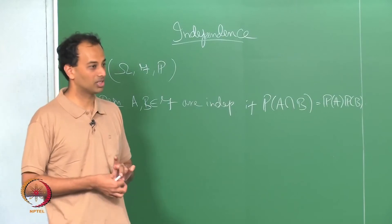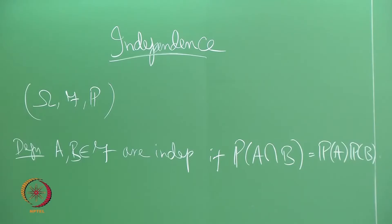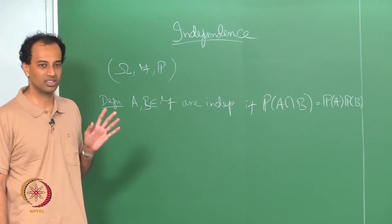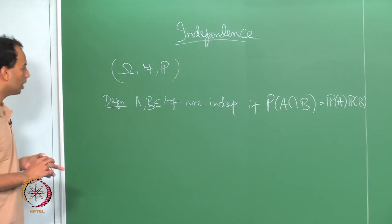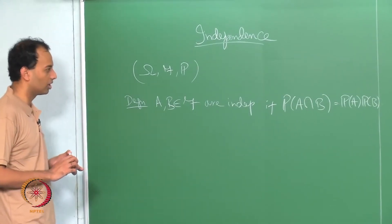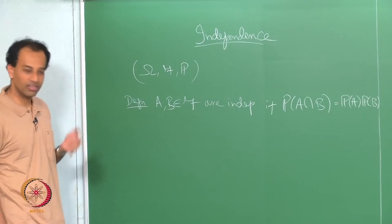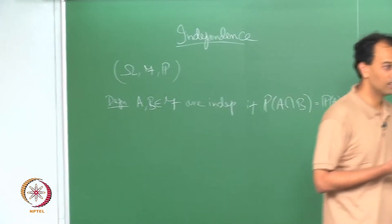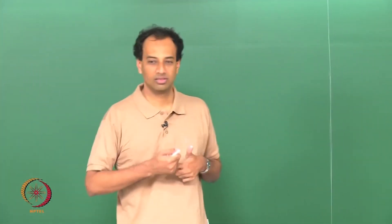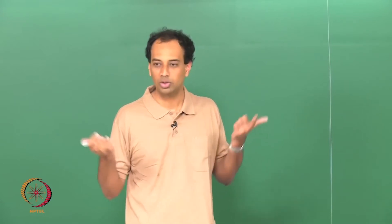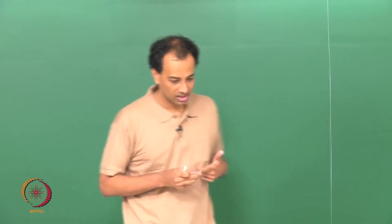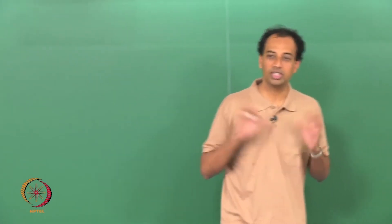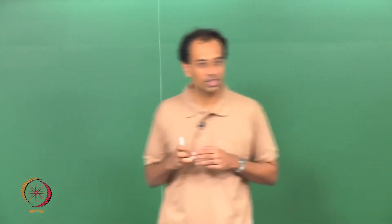When it is not clear, we have to specify under what measure they are independent. Now I want to move on and define independence for n events, then for an arbitrary collection of events, possibly an infinite or even uncountable collection of events. Then we will move on to defining independence of sigma algebras, which you will not be familiar with, unlike independence of events which you would have seen at various levels.